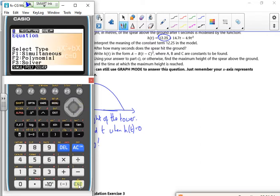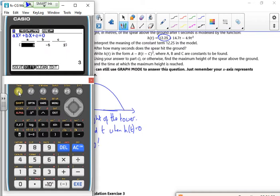Menu, equation, poly, two. What have I got then? So I've got to be careful here, it's minus 4.9 because it's the wrong way round. Plus 14.7 and 12.25. Don't get caught out with the fact that it's written the wrong way round, so you've written numbers in the wrong way round.